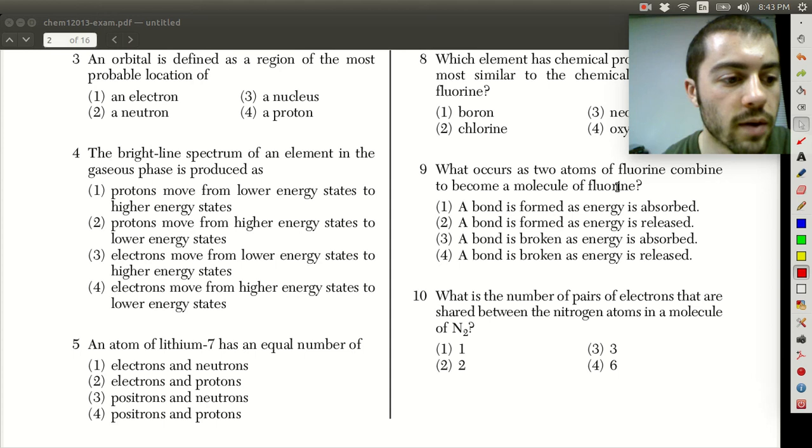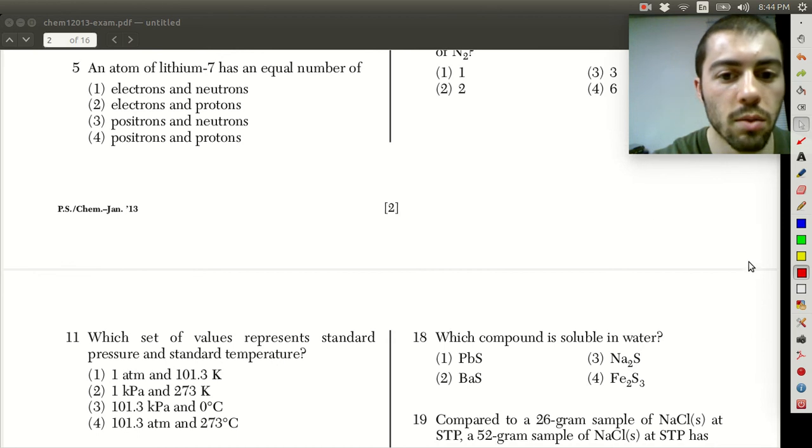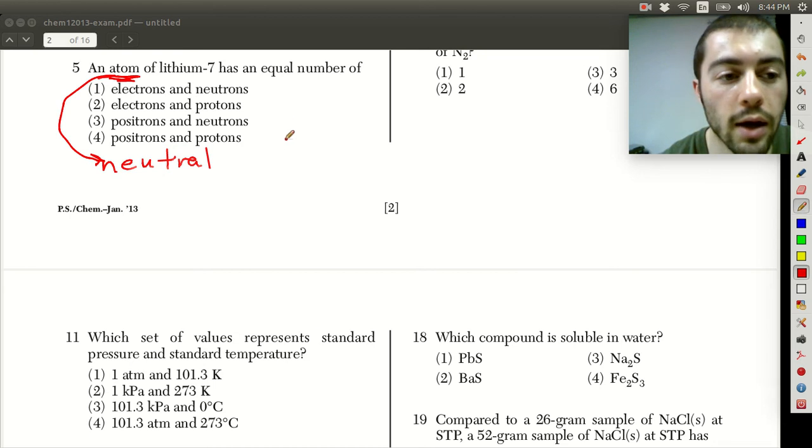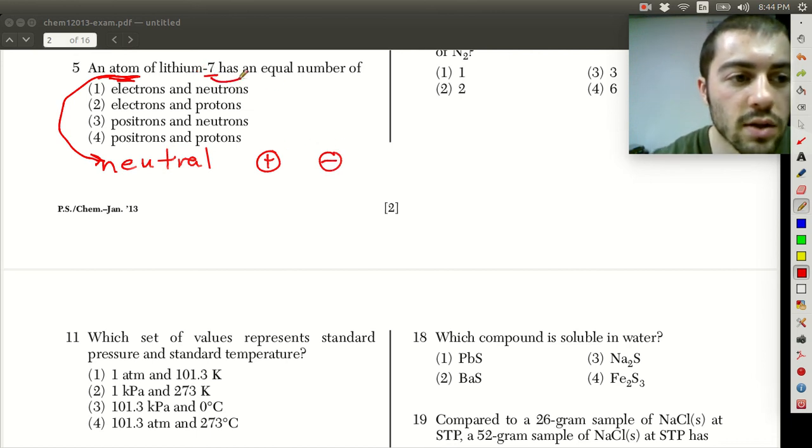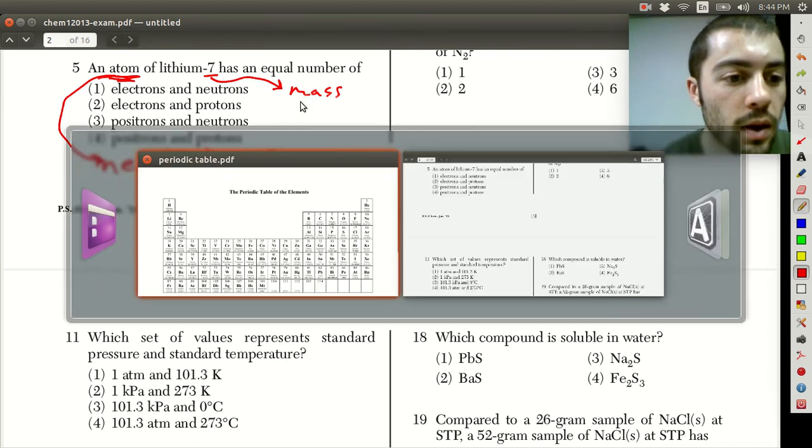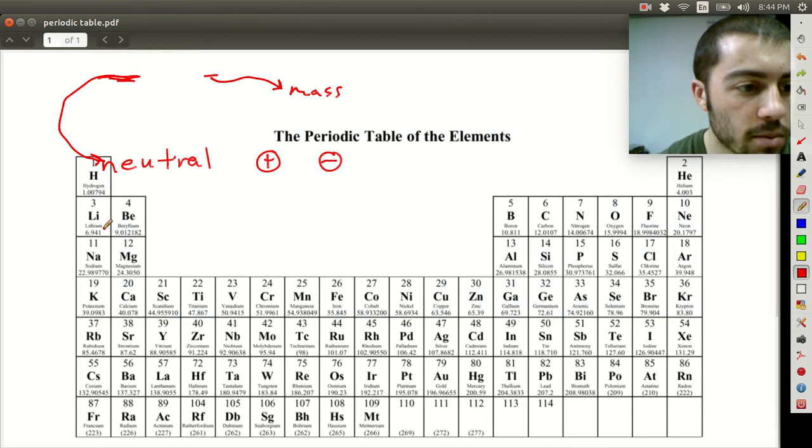Alright. And then if we look at number five here, it says an atom of lithium seven has an equal number of what? So the key is we have to read these questions carefully. It says atom so an atom means that something is neutral. If it wasn't neutral, it would be an ion. So an atom of lithium seven being neutral has to have the same amount of positive charge and negative charge. So lithium seven, the seven here tells us the mass number. That's not particularly important.